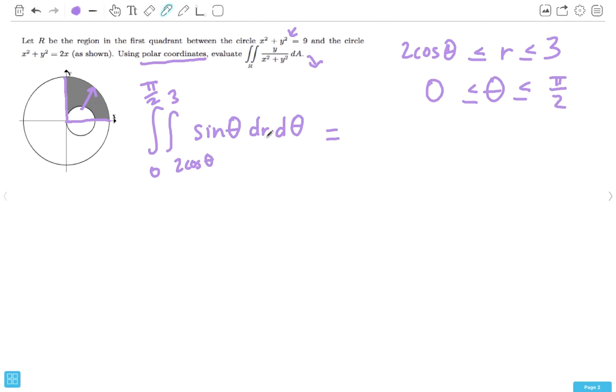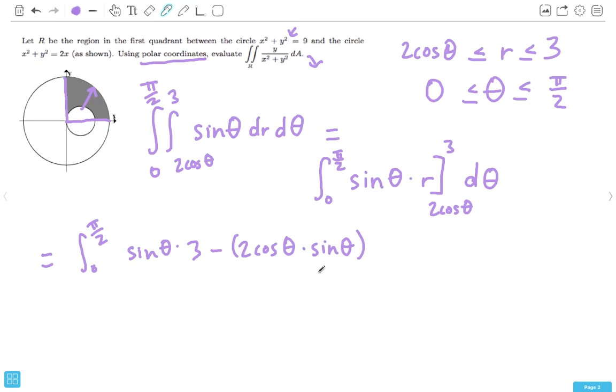So, we're integrating with respect to r first. That one's just pretty simple. Sine of theta times r. And, we're going to bound that from 2 cosine theta to 3. And, then when you're doing these double integral problems, it's always important to include the other integrands because if you don't, it gets a little weird and the teachers take points off. So, now we're just going to plug 3 in for r and 2 cosine theta for r. See what we get. That's 3 minus 2 cosine theta times sine theta. And, we can just factor out sine theta. So, we get sine theta times 3 minus 2 cosine theta, d theta.